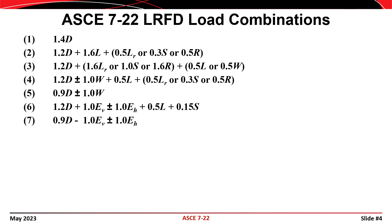Here are the seven load combinations we're going to use for this example. These combinations come from the 2022 edition of the ASCE 7 standard. Note that I've included a coefficient of 0.5 on the live load in combinations 3 and 4, which is permitted when the unreduced live load does not exceed 100 pounds per square foot. Also note that combinations 2, 3, and 4 all include L sub R, S, or R.